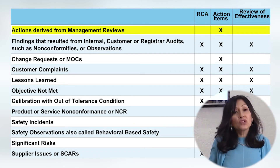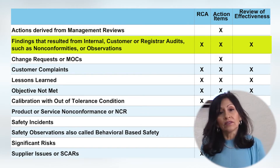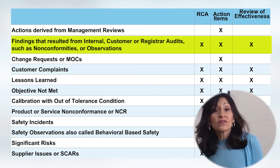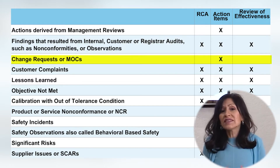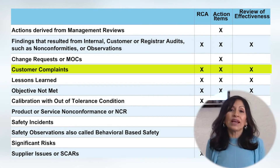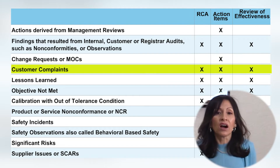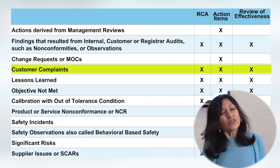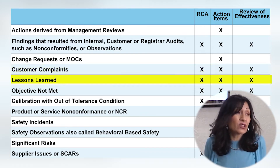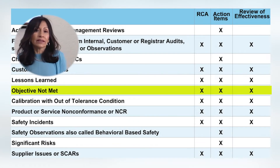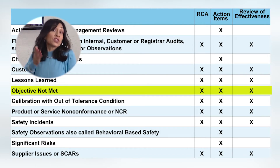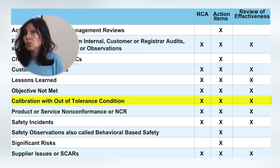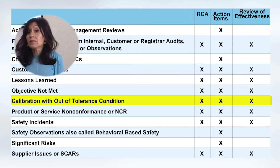Actions from a management review are usually just simple actions. Audit findings — such as non-conformities or NCNs or observations — can be solved through either a CAR or simple action items. Change requests or MOCs are typically just handled through actions to ensure the change actually happens as needed. Customer complaints are most likely handled through a CAR. Lessons learned are mostly simple actions, but sometimes a lesson learned may actually need a corrective action or CAR. Objectives not met may also be solved through action items, but sometimes may require a CAR if the objective is persistently not met.